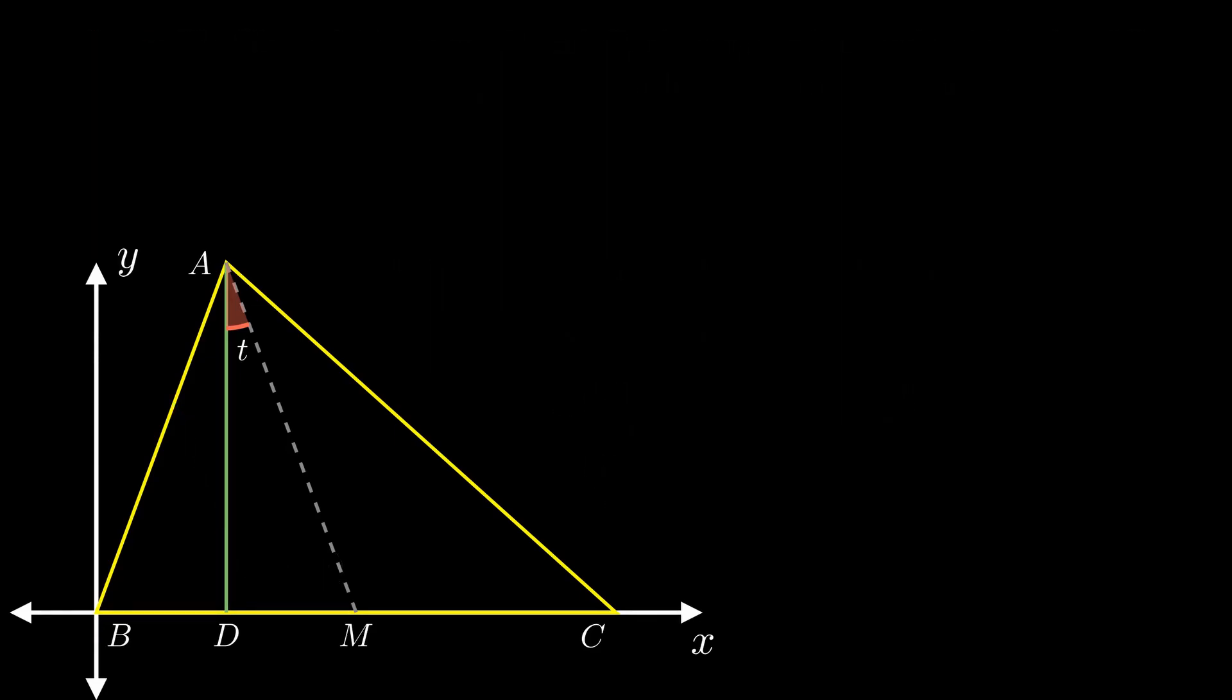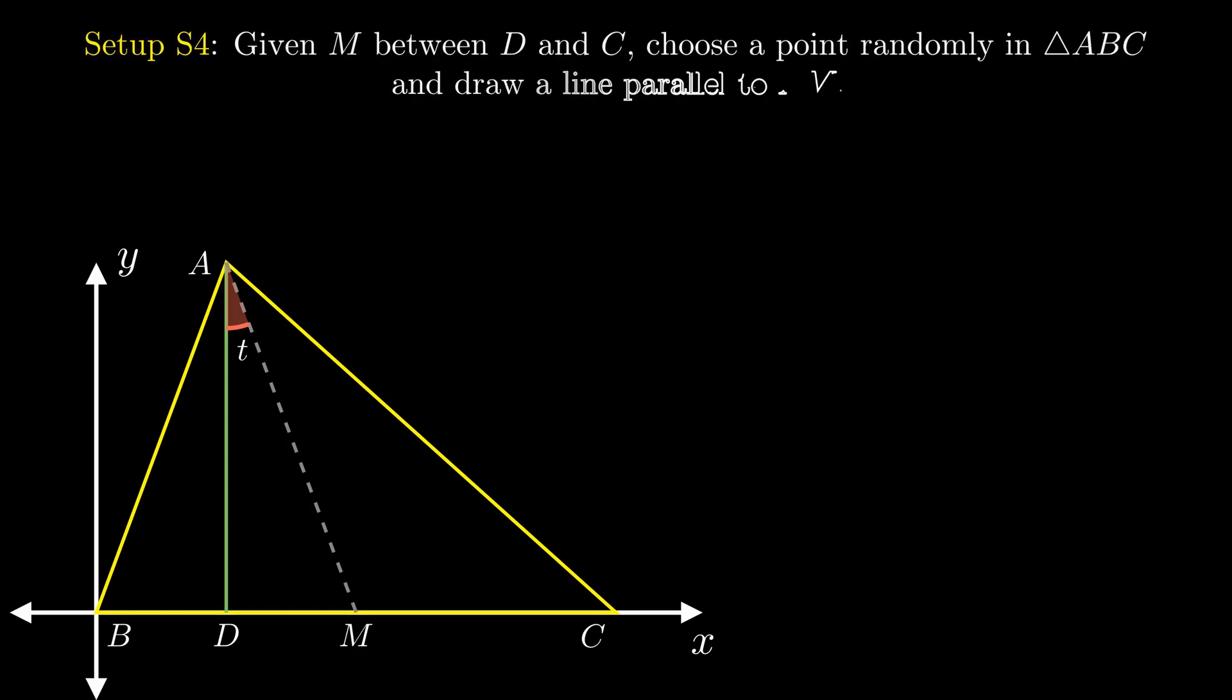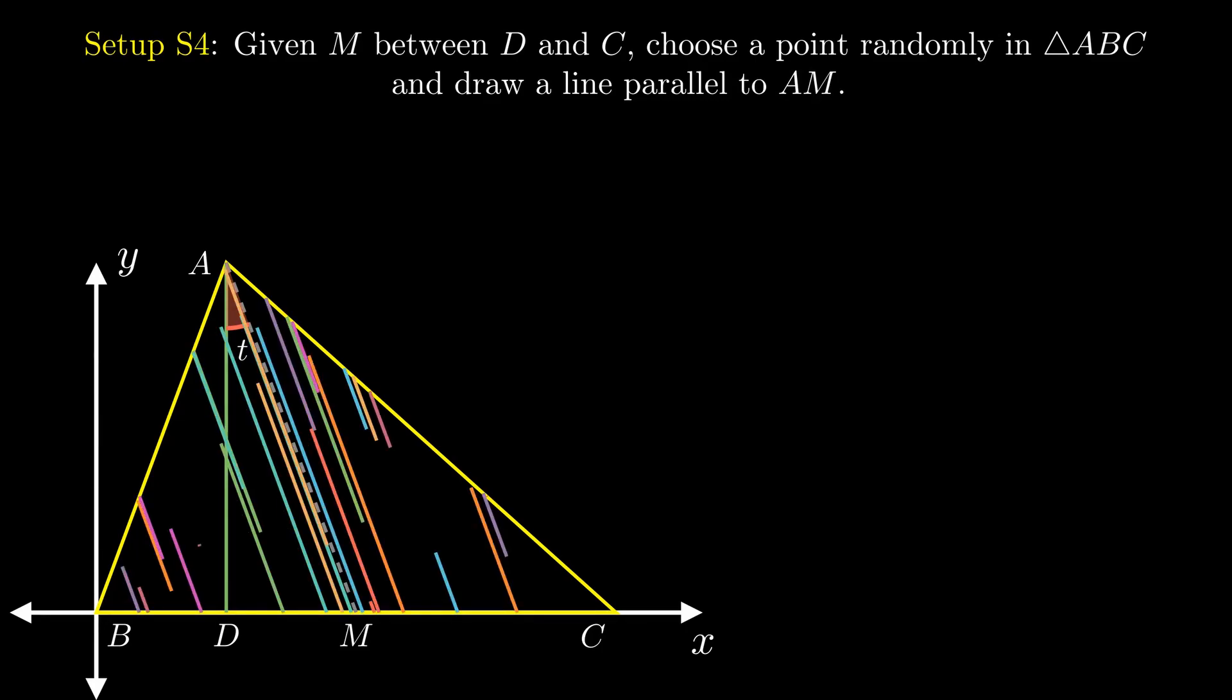Our next setup combines both the cases above. Given a point M between A and D, we choose a point randomly inside the triangle and draw a line parallel to AM, either towards BC with some probability P or away from BC with probability one minus P.